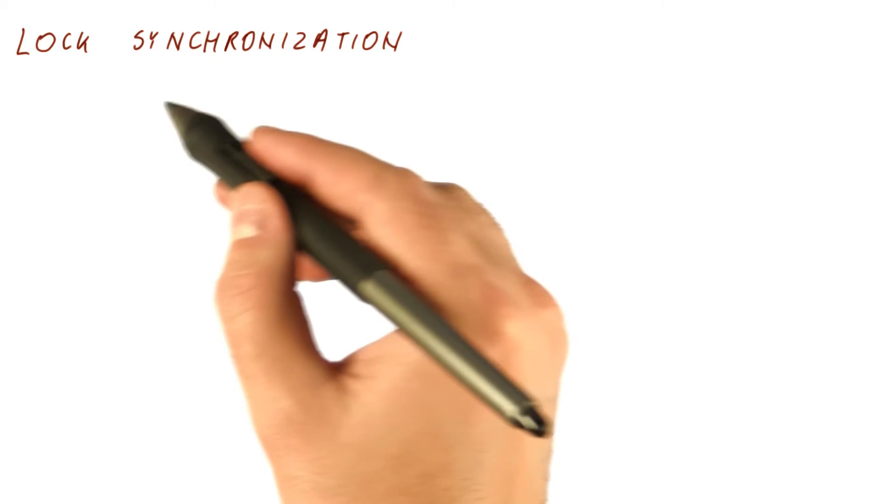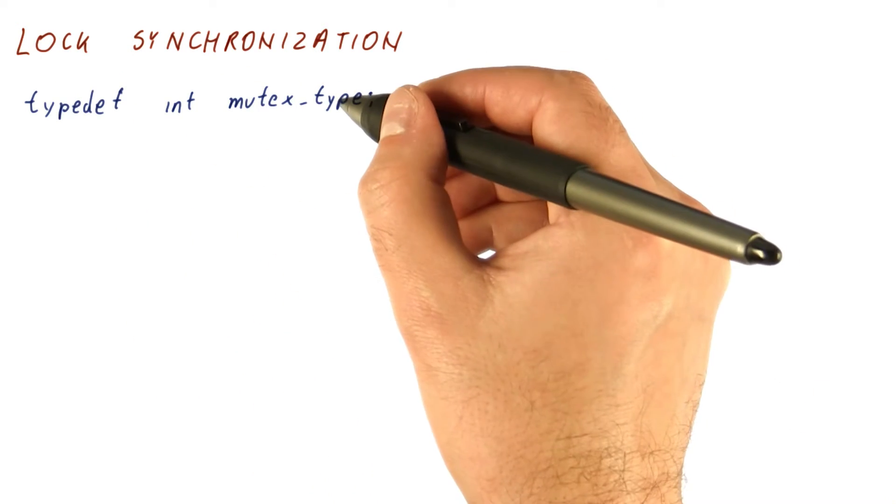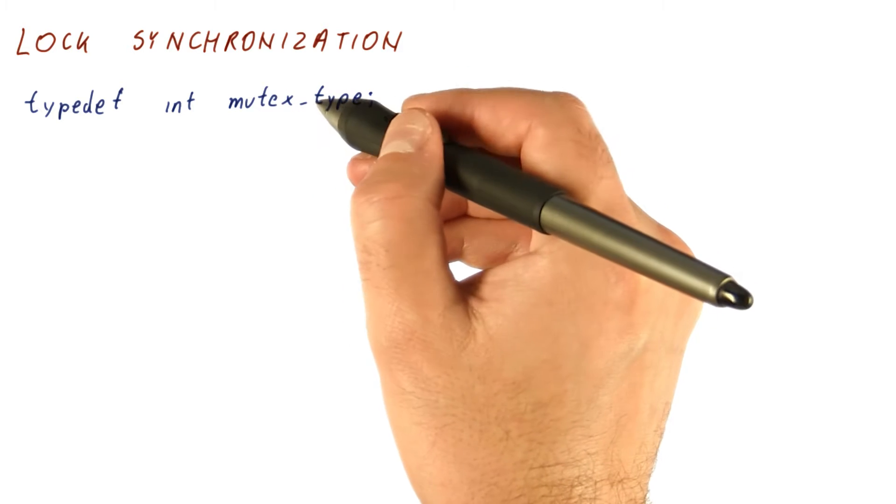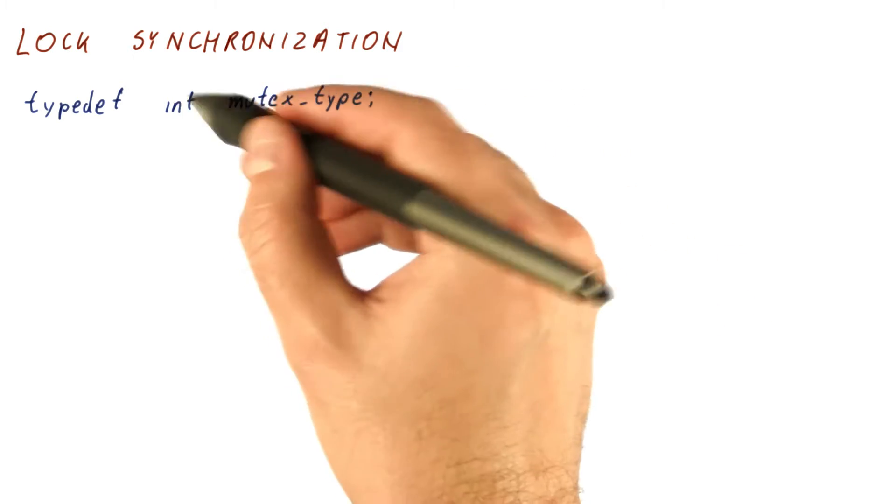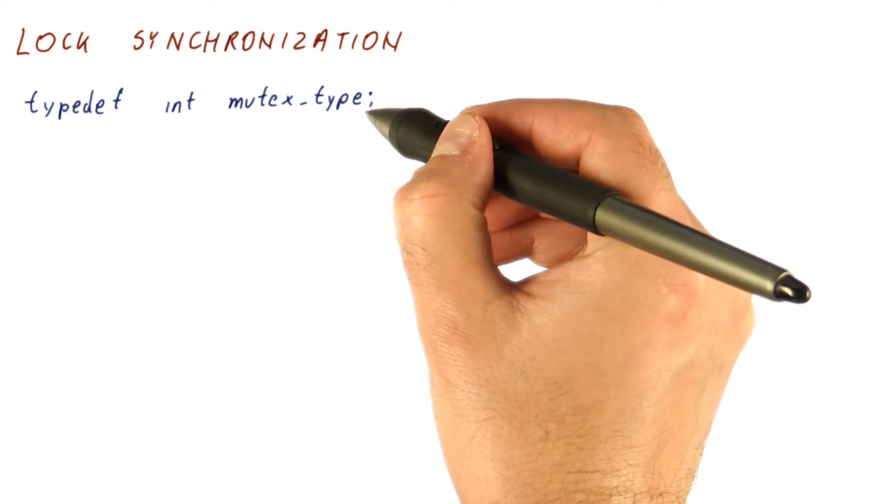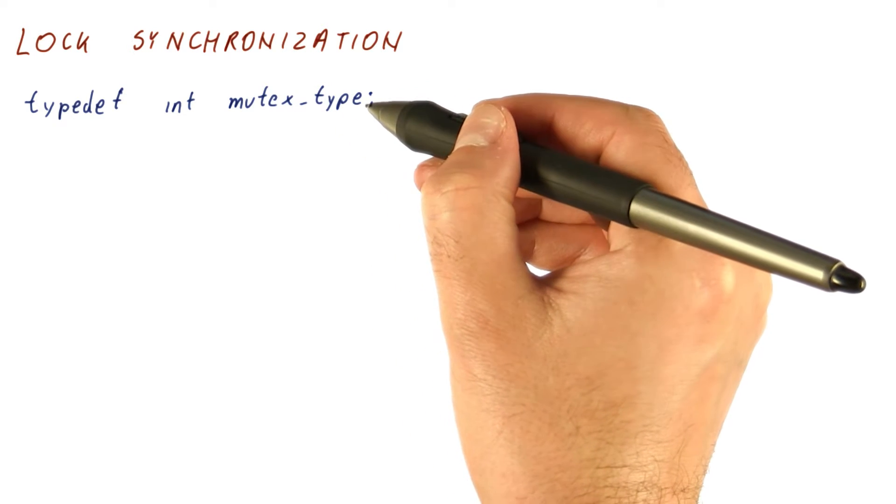So let's look at what lock synchronization looks like. We said that a lock or mutex is just a location in memory. Let's say we are using integers to represent the lock structure. So really a lock is just a number.